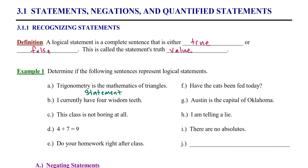Example B: I currently have four wisdom teeth. As I speak to you today, I have had all four wisdom teeth removed previously, so I do not have any wisdom teeth. But if I say I currently have four wisdom teeth, I am expressing something that is false — but it is still a logical statement. So we say this is a statement. Remember, a statement is a sentence that is either true or false.